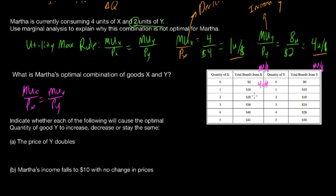The second unit of X adds 12 utils, divided by 4 is 3 utils per dollar. The third unit gives a marginal utility of 8, divided by 4 gives 2 utils per dollar. The fourth unit gives 1 util per dollar, and the fifth unit gives 0.25 utils per dollar. Now let's find the marginal utility per dollar for good Y to determine where the two are equal and find the optimal combination.